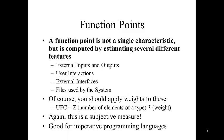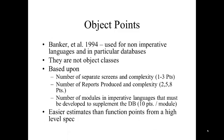Function points are good for imperative languages. If you're using something different, you may want to consider a technique called object points, created by Banker and his team. These are used for non-imperative languages, and in particular databases. They're not object classes, but based on the number of separate screens and complexity — one to three points per screen; number of reports produced and complexity — two, five, or eight points per report; and number of modules in imperative languages that must be developed to supplement the database, given ten points per module. These are easier estimates than function points for high-level specification.